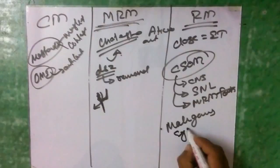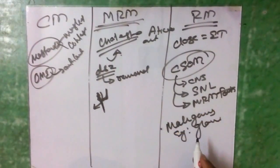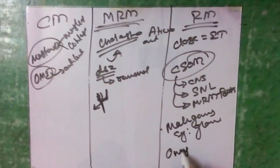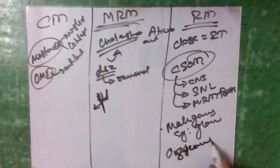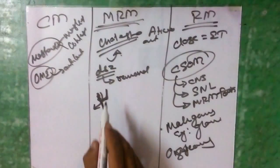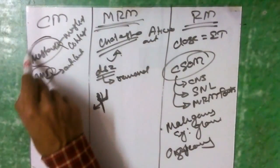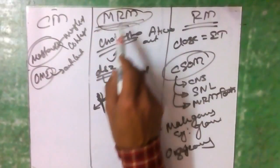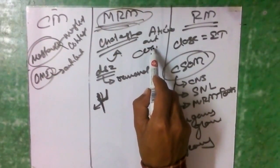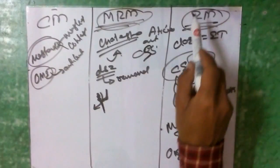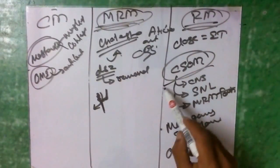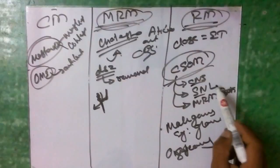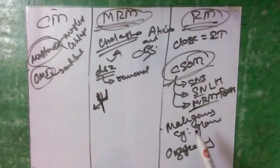RM is also indicated for malignancy of the middle ear such as glomus tumor, and for osteomyelitis of the temporal bone. In summary: cortical mastoidectomy is for mastoiditis; MRM is for cholesteatoma in atticoantral CSOM; and RM is for severe complicated CSOM with CNS complications, sensorineural hearing loss, failed MRM, malignancy of the middle ear, or osteomyelitis of the temporal bone.